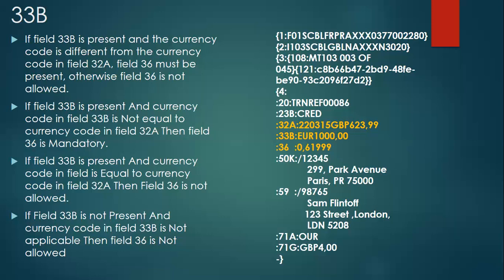If field 33B is present and the currency code is different from the currency code in field 32A, then field 36 must be present. Conversely, if the currencies are the same, field 36 is not allowed. Whenever 33B is present — meaning the instructed amount along with its currency — if that currency is the same as in 32A, then 33B is not mandatory.